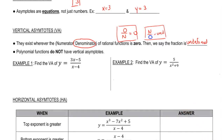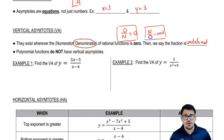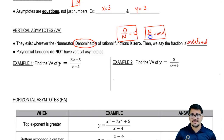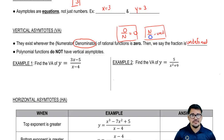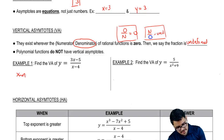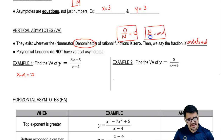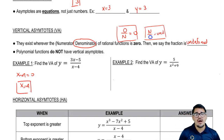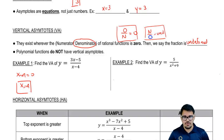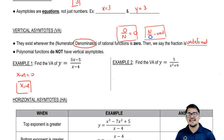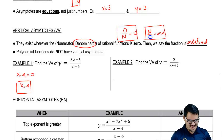Find the vertical asymptote of y equals (3x minus 5) over (x minus 4). We don't care about the top — all we care about is the denominator. So we set the bottom equal to 0: x minus 4 equals 0. Then we solve for x and get x equals 4. So our vertical asymptote is x equals 4. It's not just 4 — it is x equals 4, because our vertical asymptote is an equation.